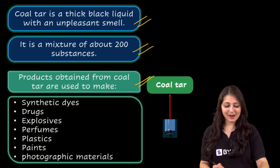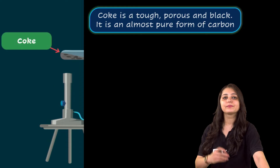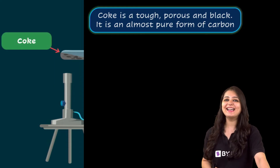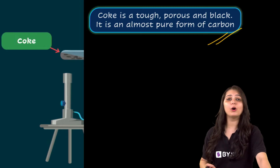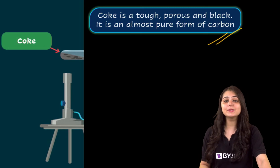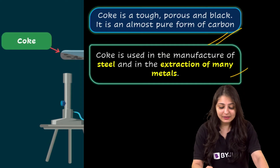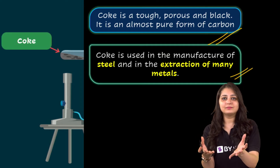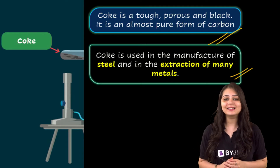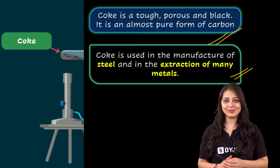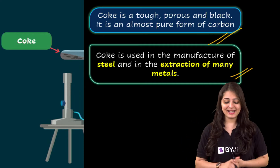Moving on to coke — it's tough, porous and black in colour, and it's actually an almost pure form of carbon. It is used as a fuel in homes and factories. But more importantly, it is largely used as a reducing agent in the extraction of metals from their ores, and it is also used in the manufacturing of steel.